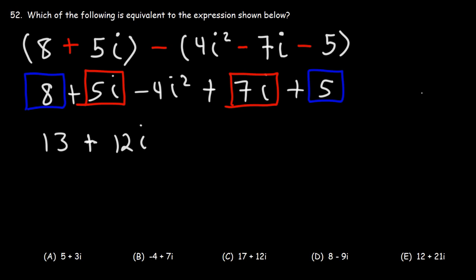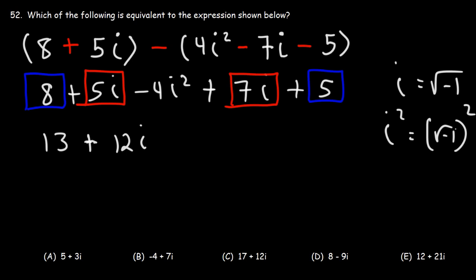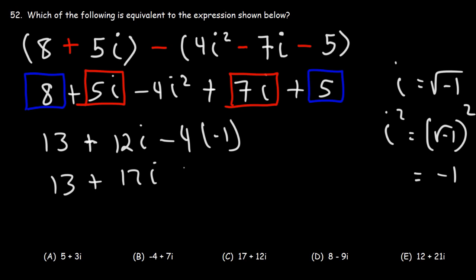Now what is i squared? i is the square root of negative 1, so i squared is going to be the square root of negative 1, squared, which is negative 1. So negative 4i squared is negative 4 times negative 1, which becomes positive 4.